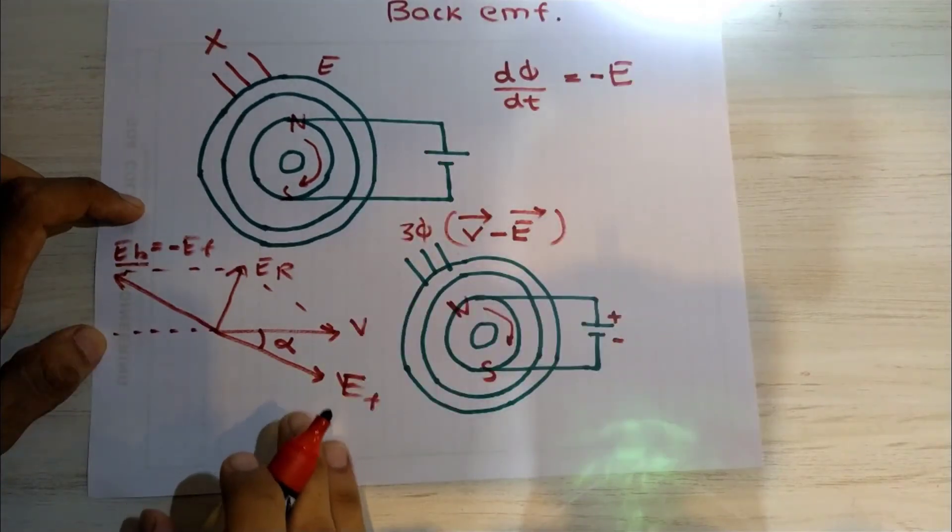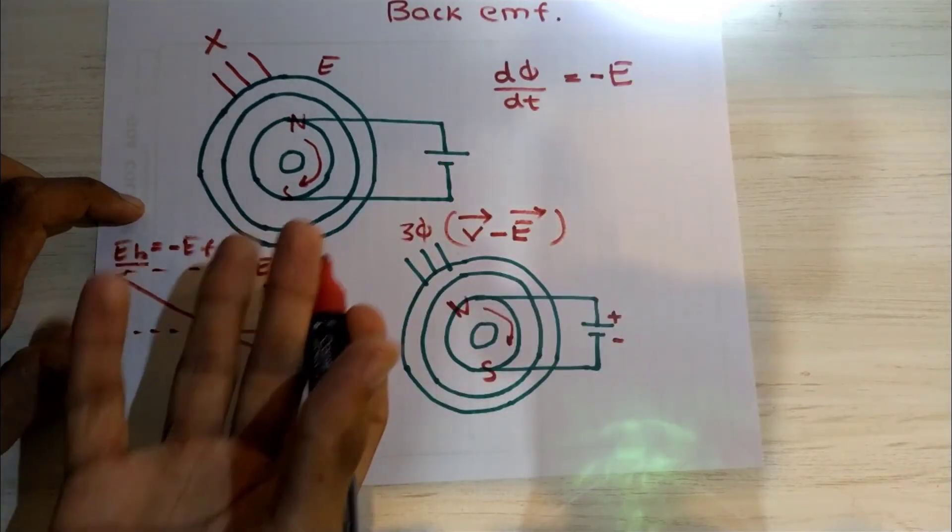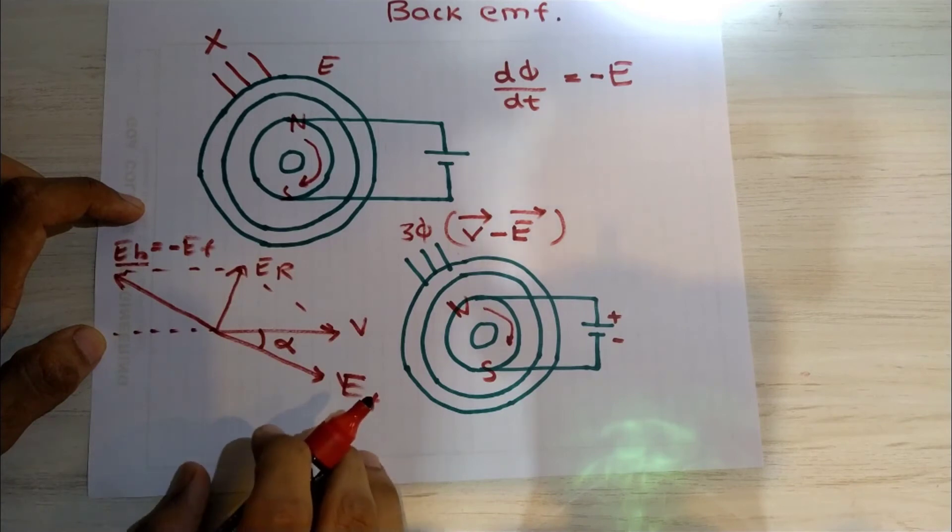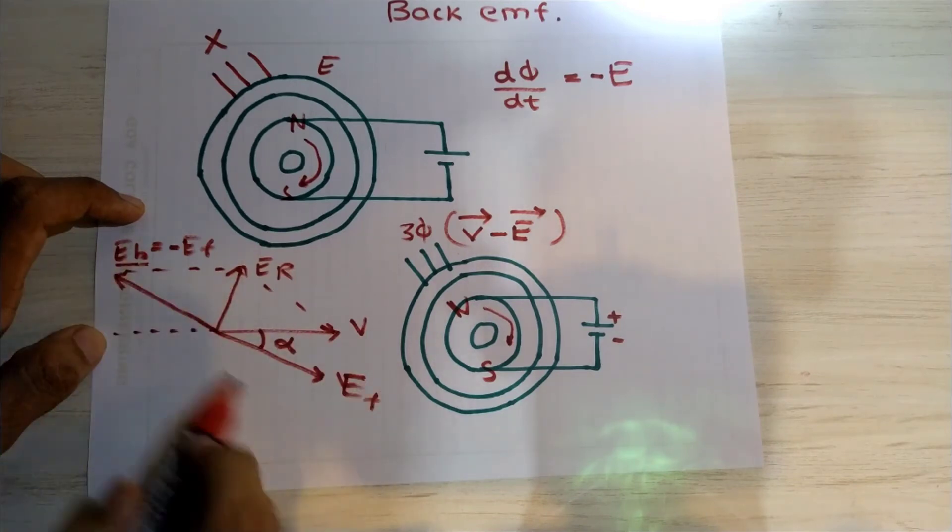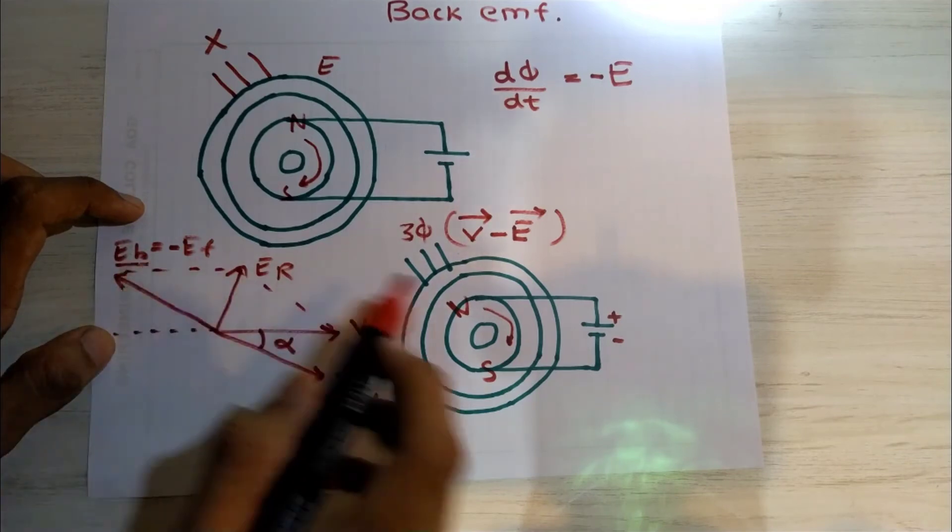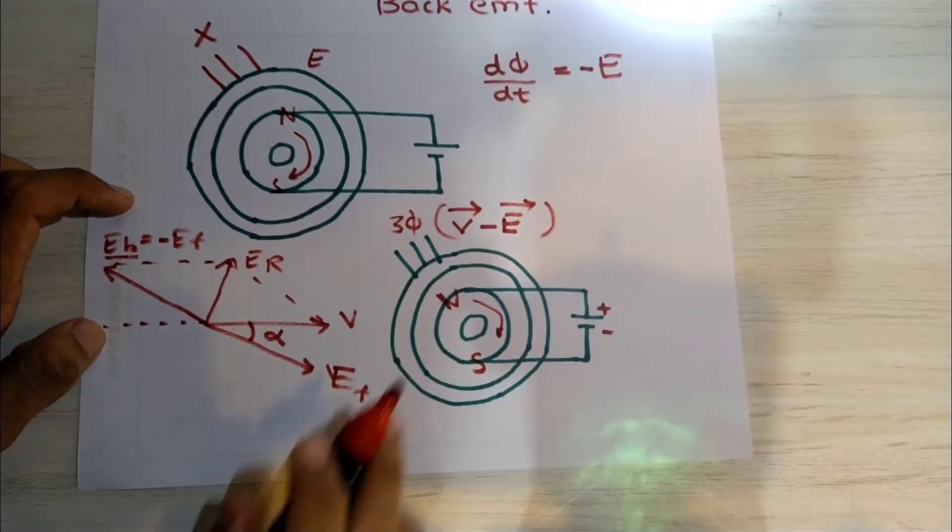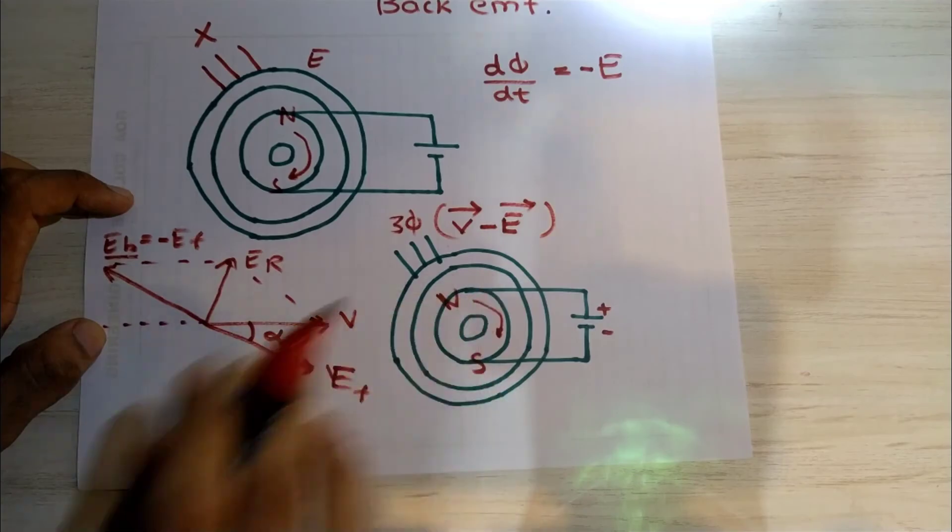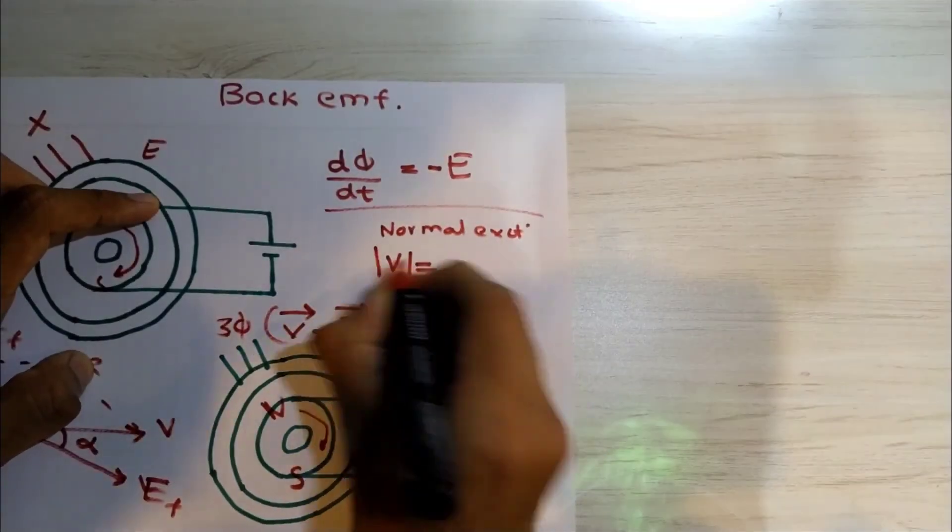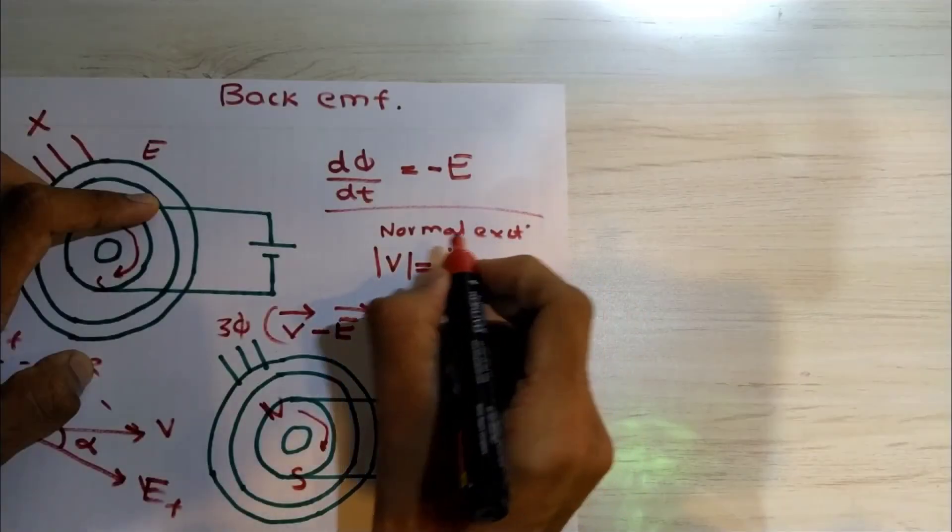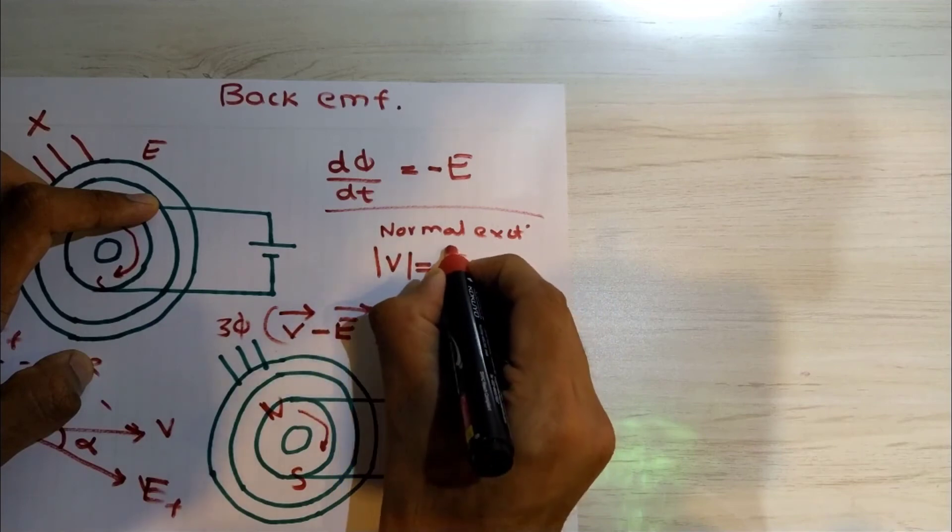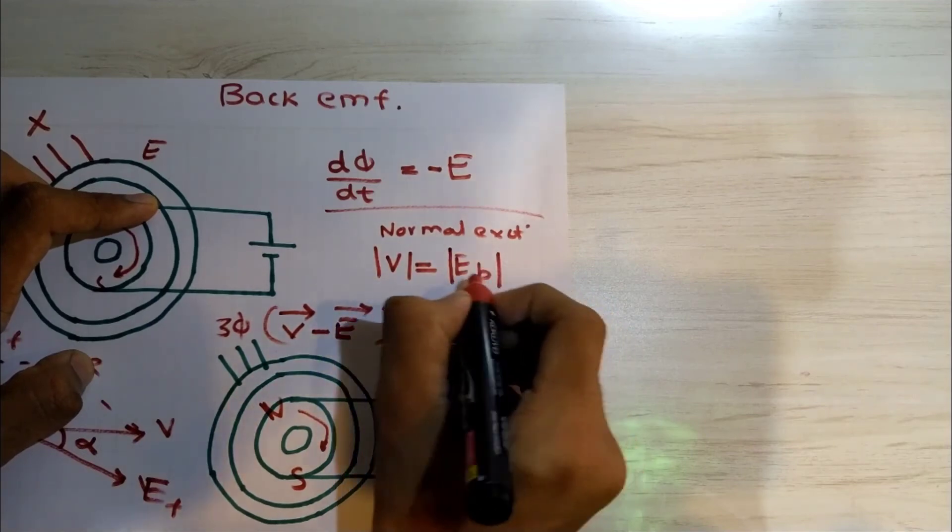Now, in order to understand what is over excitation or under excitation, we have to keep in mind only one thing, and that is EB. EB is only dependent on the rotor parameters, which is the excitation. For normal excitation, the magnitude of terminal voltage V should be equal to that of back EMF voltage EB.